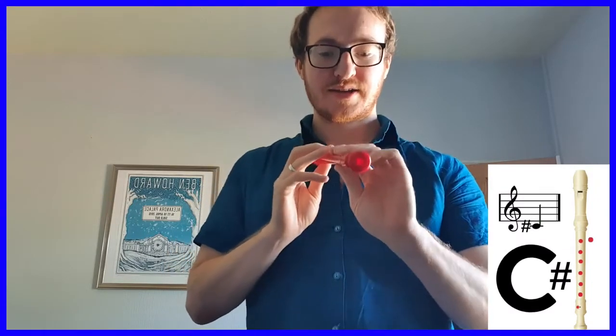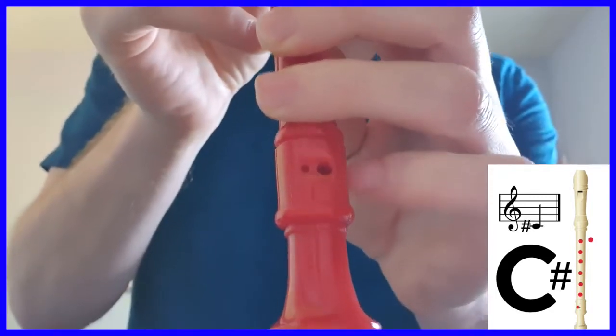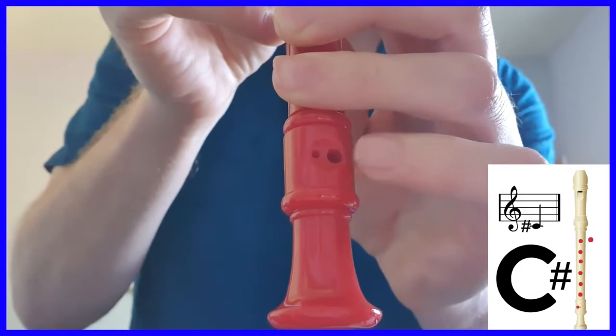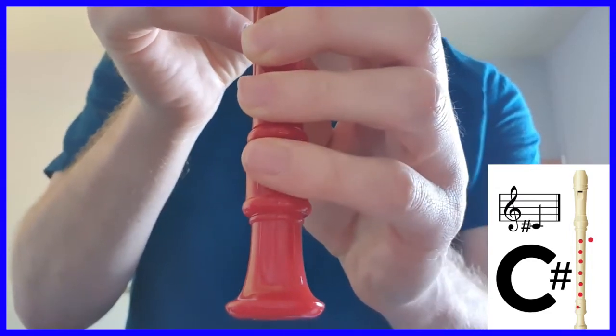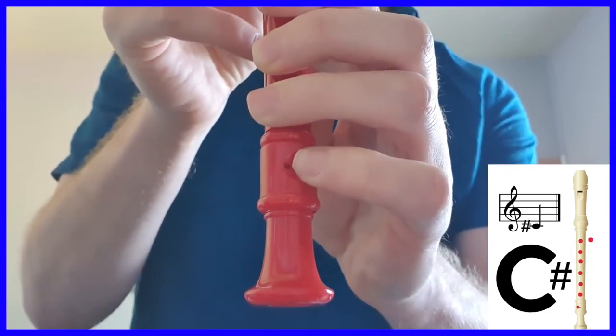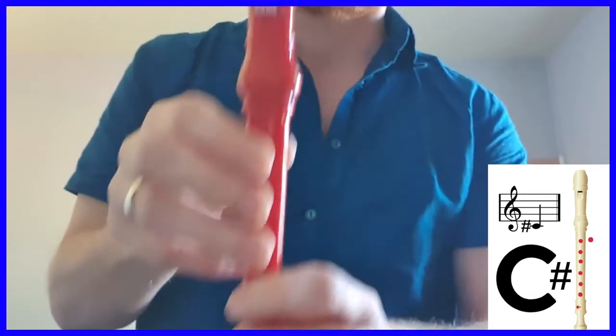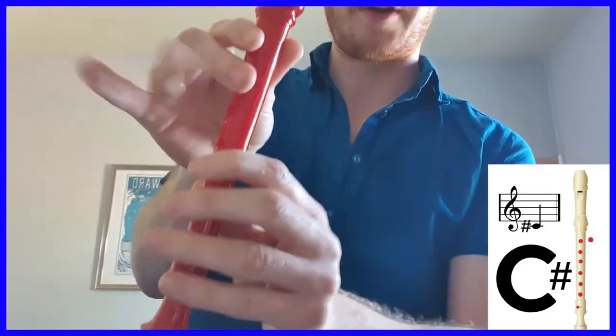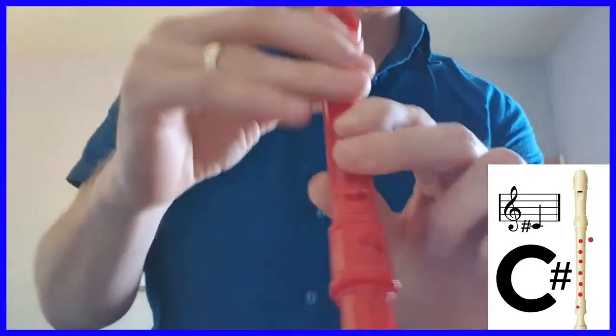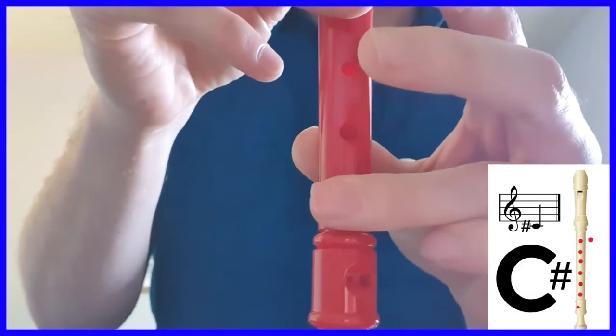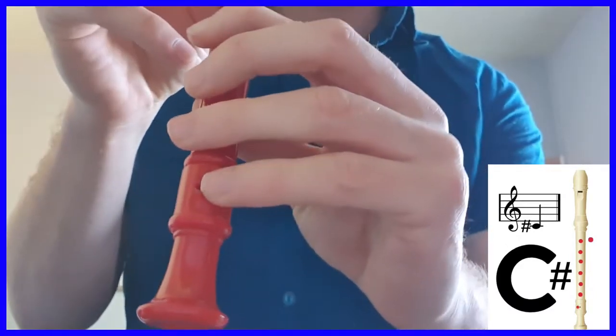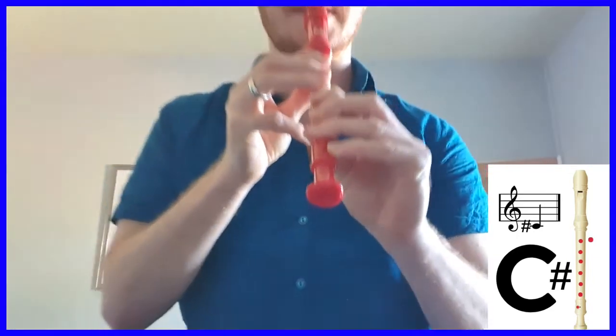A low D. You'll notice on this last hole of the recorder there are actually two holes there. What you need to do to play a low C sharp is cover the bigger one but not the smaller one. Do you see that? That's covering both of them. That's just covering the bigger one. Keep all the other seven holes—one, two, three, four, five, six, seven—totally covered. The D hole we're covering completely, but the C hole we're only covering half of it, and that will give us a C sharp.